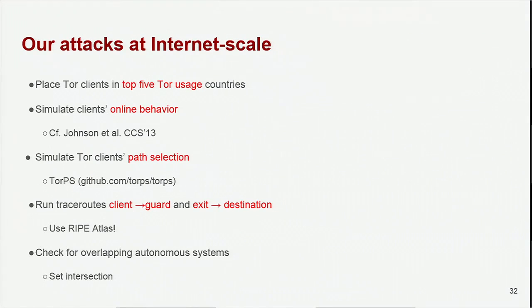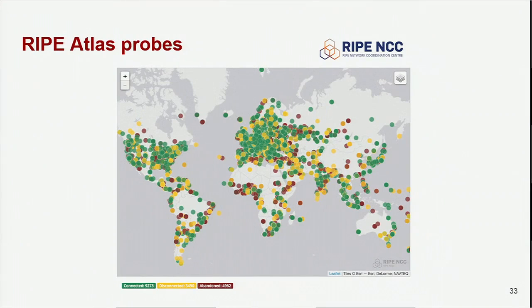Finally, we wanted to get a better understanding of how our attack would work at internet scale. For this, we followed a well-established method. We simulated clients from the five countries that have the most TOR users and placed them in the ASs of those five countries' most popular ISPs. Then we simulated their online behavior, similar to Aaron Johnson et al.'s CCS paper called 'Users Get Routed', and made them visit several websites throughout the day. We also used the TOR path simulator for TOR path selection. We ran traceroutes for ingress TOR traffic and egress TOR DNS traffic using the RIPE Atlas measurement platform to get the ASs that were traversed, and labeled a connection as compromised if it traverses the same AS on the ingress and egress side. RIPE Atlas has many measurement probes in the same ASs as TOR relays, so we took advantage of that.